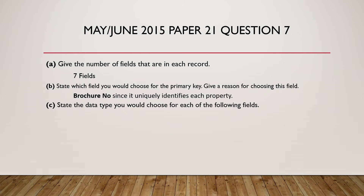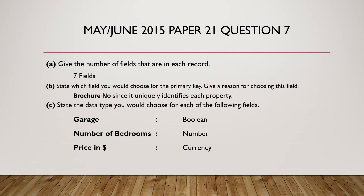The last part: state the data type of the following fields. We have 3 fields to look at — garage, number of bedrooms, and price in dollar. The answers are: garage as Boolean, number of bedrooms as number, and price in dollar as currency.